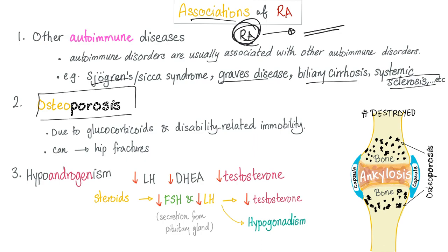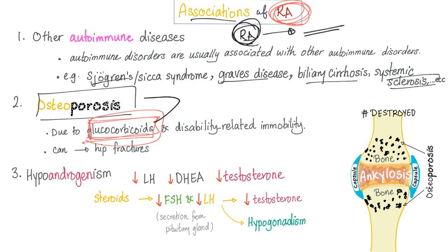Osteoporosis — why? Because patients with rheumatoid use glucocorticoids as anti-inflammatory and analgesic agents (no inflammation means less pain), and disability-related immobility also contributes. Glucocorticoids are excellent anti-inflammatory drugs, but they risk avascular necrosis and osteoporosis. Osteoporosis can lead to hip fracture, which is especially horrible in the elderly — the fatality rate of hip fracture is greater than that of myocardial infarction in the elderly population.